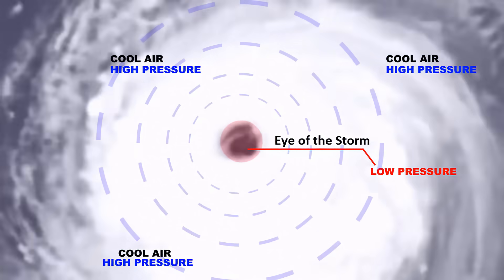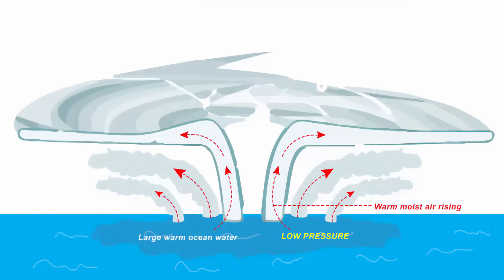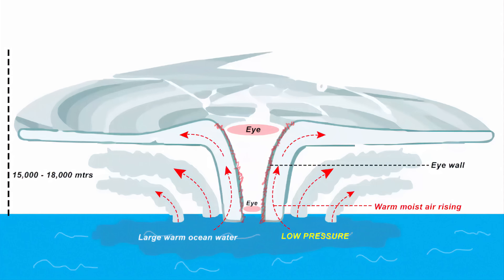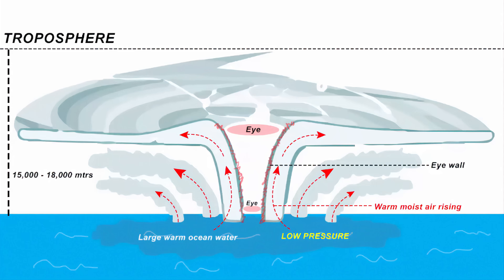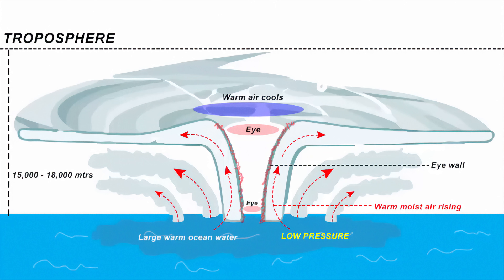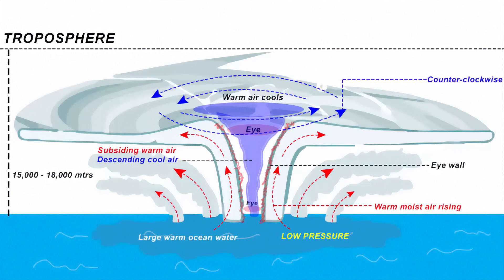So far we have seen the top view of a tropical cyclone — and this is what it looks like vertically. This is the eye of the storm; around the eye is the eye wall. The circulation of the tropical cyclone extends up to the troposphere, around 15,000 to 18,000 meters. When warm moist air rises and reaches a certain height, it starts cooling because temperature drops with increasing altitude. As the air cools, it becomes denser and moves towards the ground — this is called subsiding warm air, and this intensifies the storm by increasing its diameter. As the diameter increases, the spiral rain bands expand and push rain clouds into the outer region.